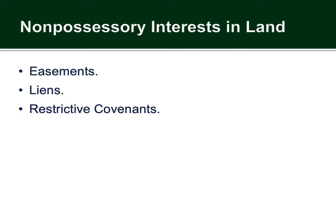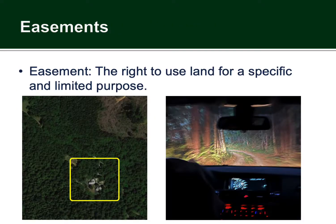As promised, we're now going to talk about non-possessory interests — real estate interests you may not have had formal exposure to before, although you will have encountered examples of them in real life. These are easements, liens, and restrictive covenants, and we'll talk about each in turn. First, easements — this is the right to use land for a specific and limited purpose.